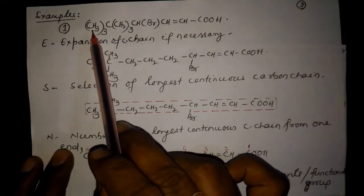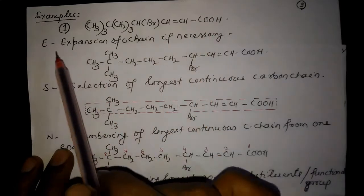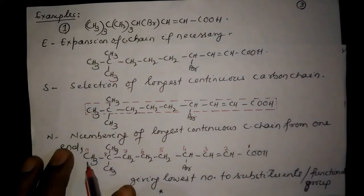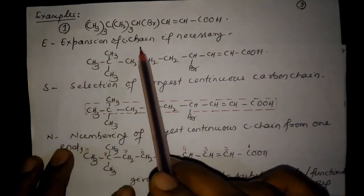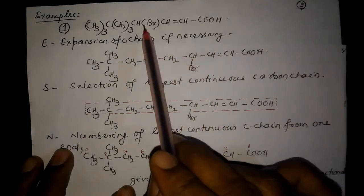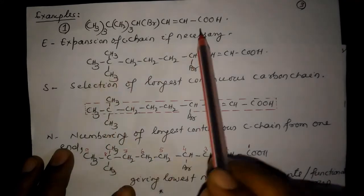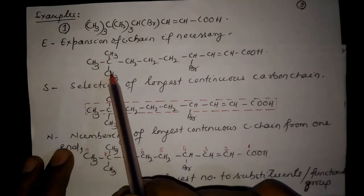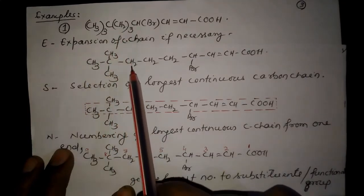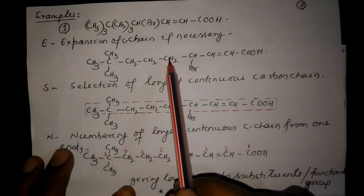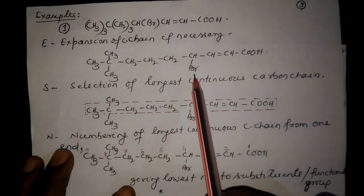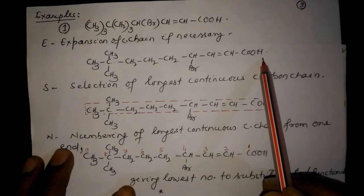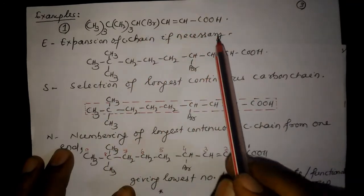Let us take an example as shown here. To write the IUPAC name of this organic compound, you should follow certain tricks. First, E: expansion of carbon chain, if necessary. Here we have to expand the carbon chain. CH3 whole 3 C means C is surrounded by 3 carbon atoms on 3 different sides. CH2 whole 3 means CH2 should be written in this fashion. CH(Br) means bromine should be written in this form. Then CH2, CH, COOH — this is the expanded form of the above organic compound.